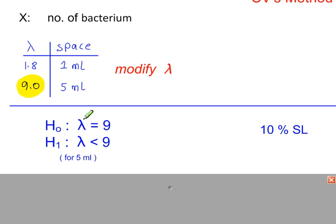So H0: lambda equals 9. H1: we're looking for a decrease. 10% significance level.